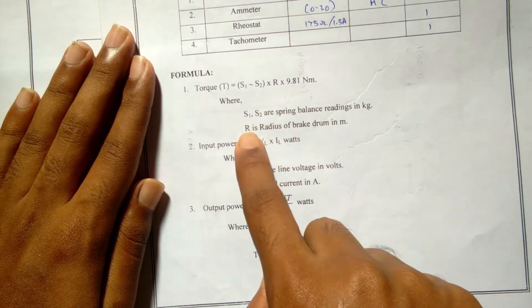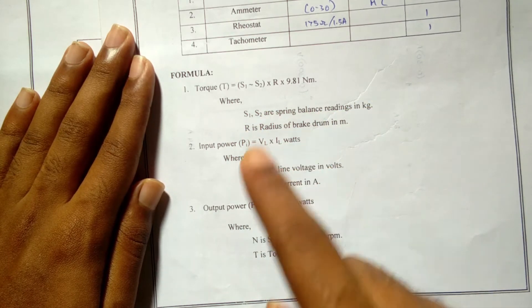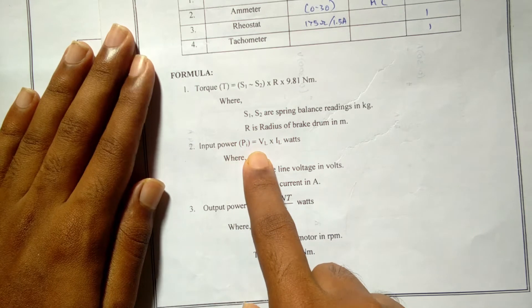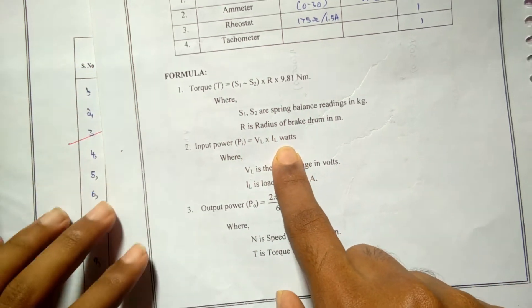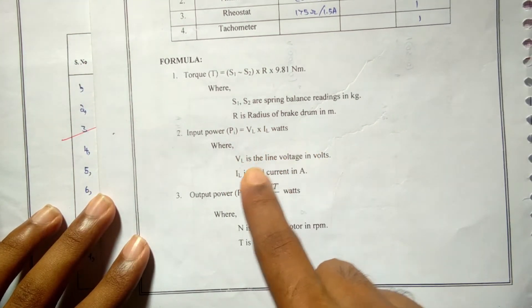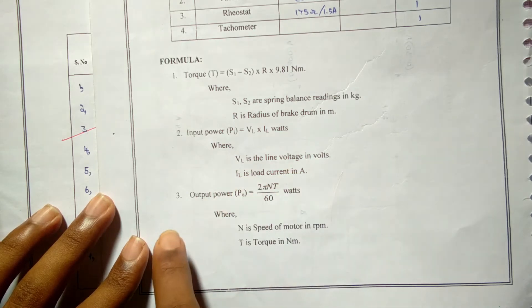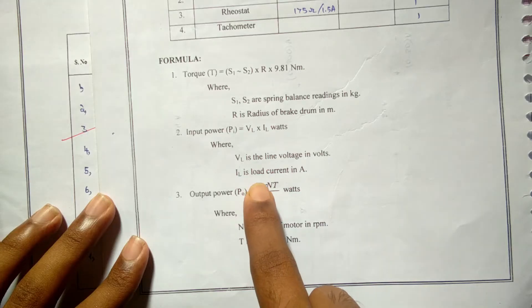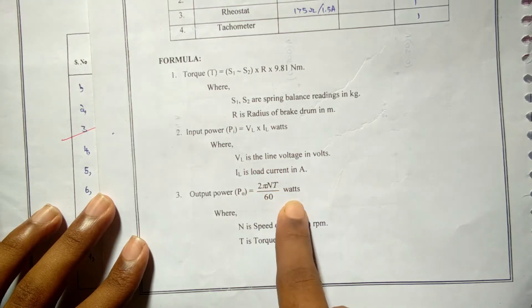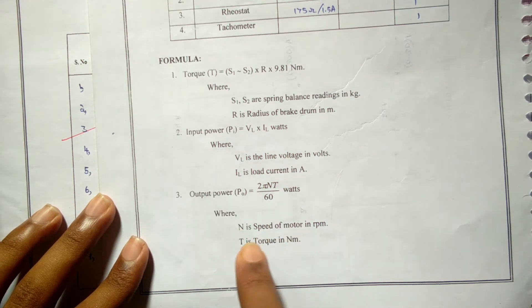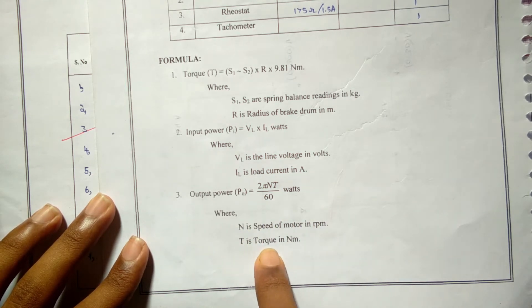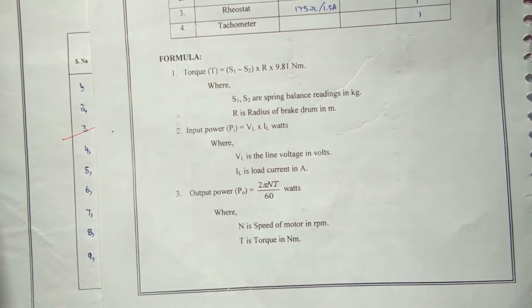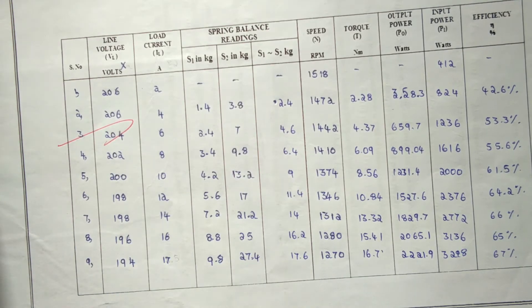Input power Pi = VL × IL, where VL is the line voltage and IL is the load current. Output power Po = 2πNT/60, where N is the speed of the motor in rpm and T is the torque.